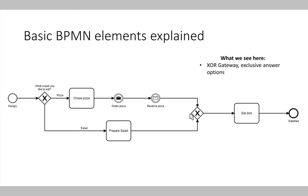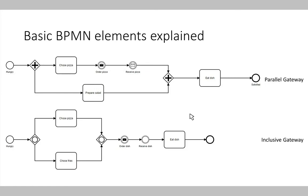There are also other types of gateways — not only the XOR gateway but also the parallel and the inclusive OR gateway. The parallel gateway, marked with a plus sign, executes both process paths in parallel. The process arrives at the parallel split gateway and splits into two parallel paths: we simultaneously choose a pizza, order it, and receive it, while also preparing a salad. Once both process paths are finished, they are joined together and we can eat our dish consisting of pizza and salad.